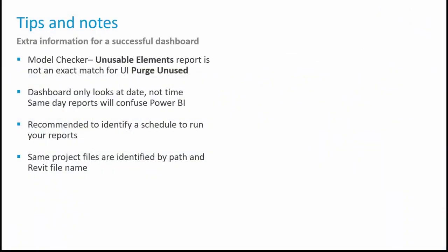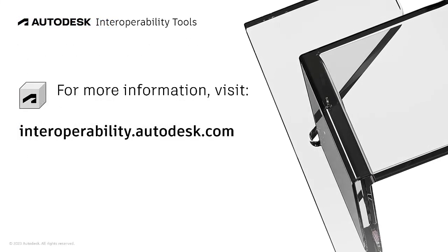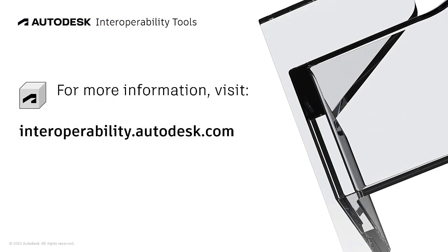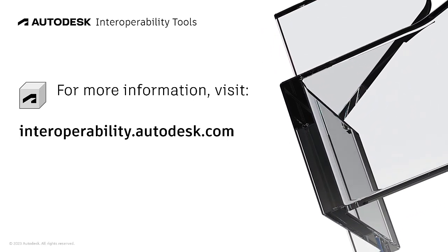A few quick tips: the Model Checker's unusable elements report is not an exact match for the UI Purge Unused dialog — we can't access that data through the API directly — but it's a good general reference for unused items in your project. The dashboard looks at the date only, not the specific time, so same-day reports for the same project will confuse Power BI; establish a consistent schedule for running reports. Finally, project files are identified by their path and Revit file name. We hope you find this dashboard useful — feel free to use, dissect, and modify the template to fit your specific needs. Thanks for watching.